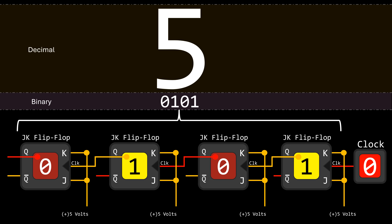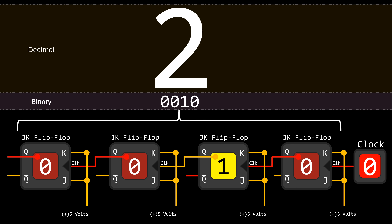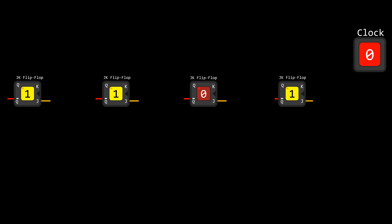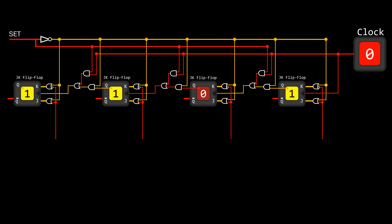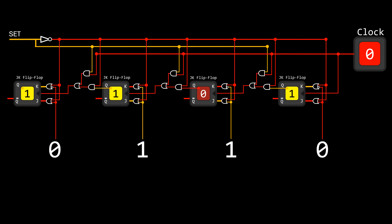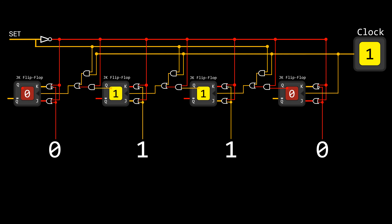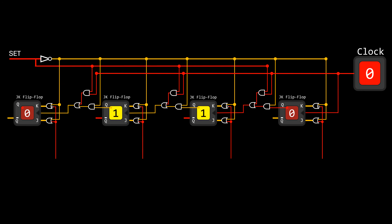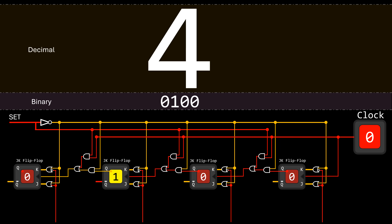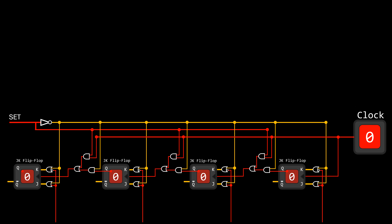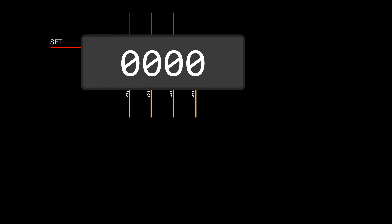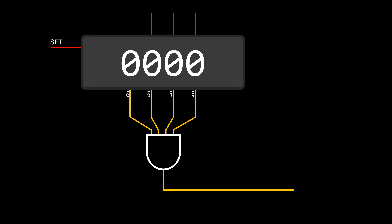A timer is much more useful when we can set its initial value, and we can achieve that with just a bit of extra logic. I'm using a general set line to avoid both J and K on each flip-flop being active at the same time. This allows us to control whether only J or only K is active, depending on the bit value we want to set in each flip-flop. Instead of toggling the flip-flops, the next rising edge of the clock causes all of them to load and store a specific value. That way, the timer starts counting down from this specific value rather than from its maximum possible value. With additional logic, we can also detect when the timer reaches zero, which can activate a signal on a wire used as a source of interrupts.